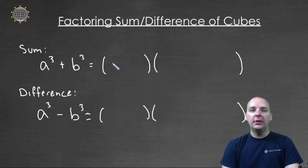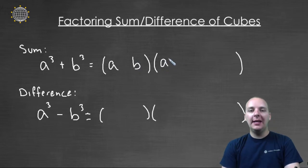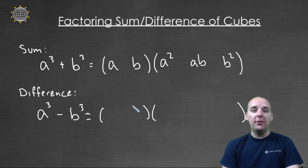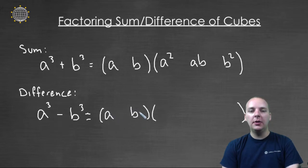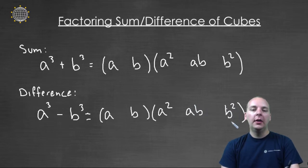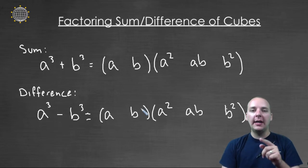The smaller parentheses will have an A and a B, and the larger parentheses will have an A squared, an AB, and a B squared. That's the same thing for a difference of cubes — you have an A, a B, an A squared, an AB, and a B squared. The only difference in these two factorizations is going to be the pluses and minuses put between these terms.